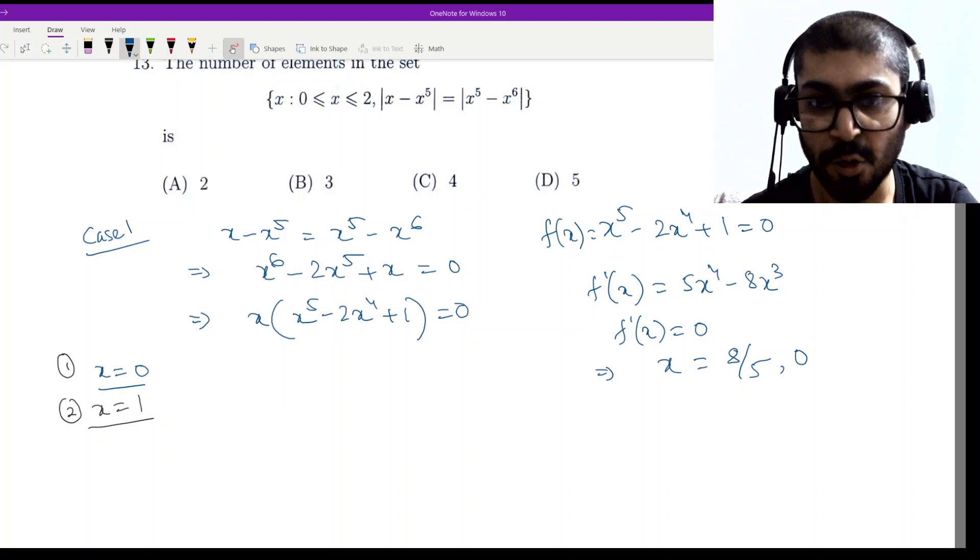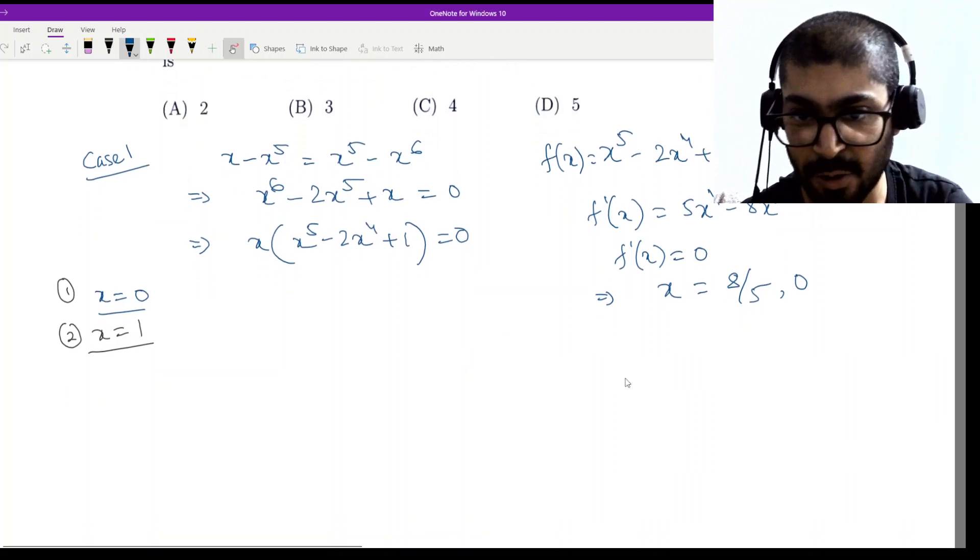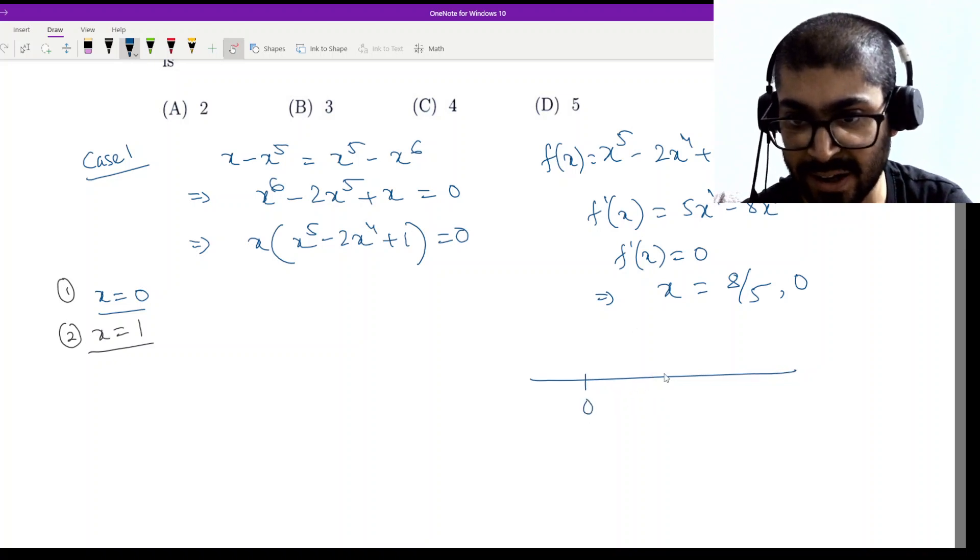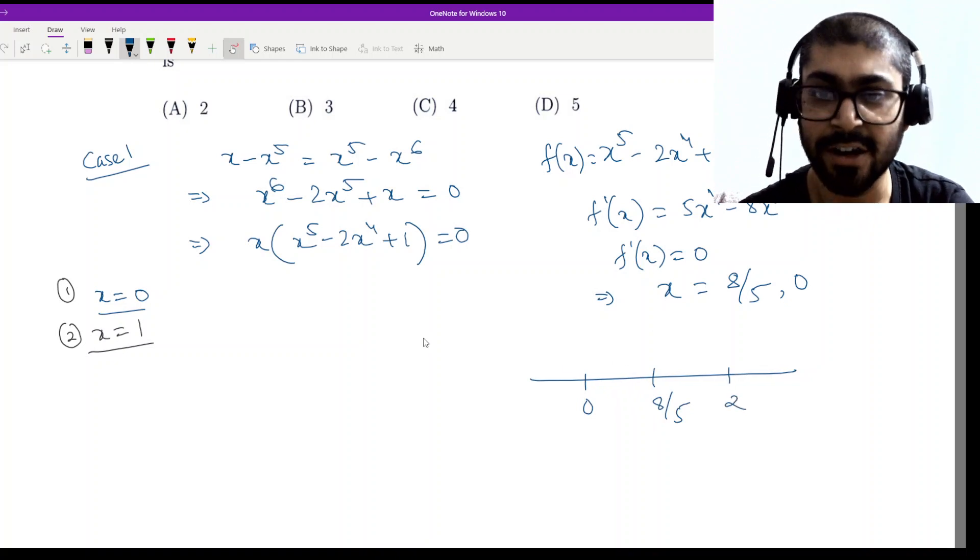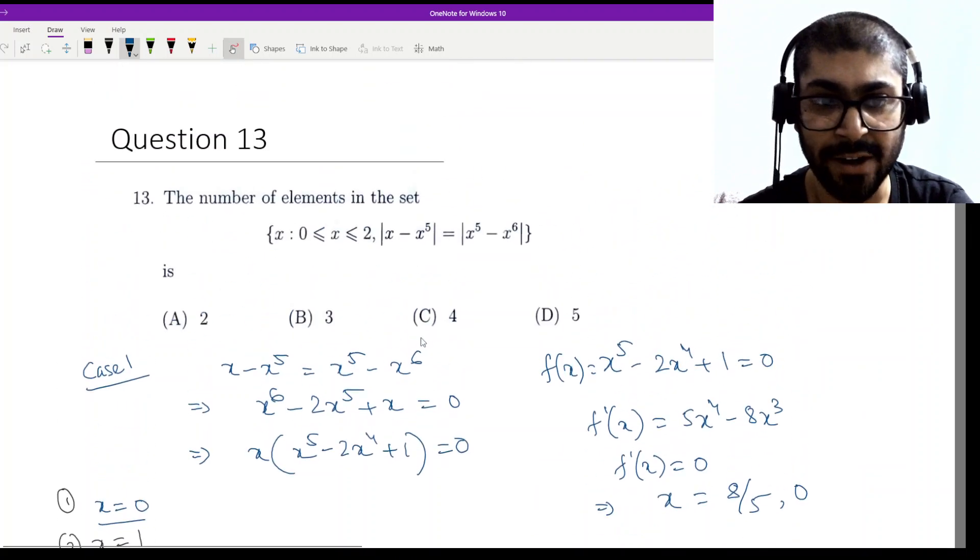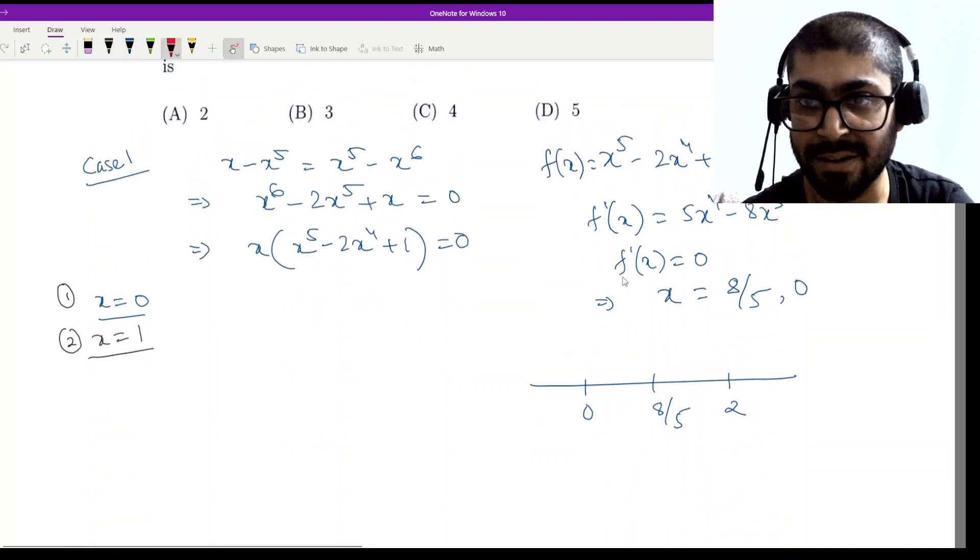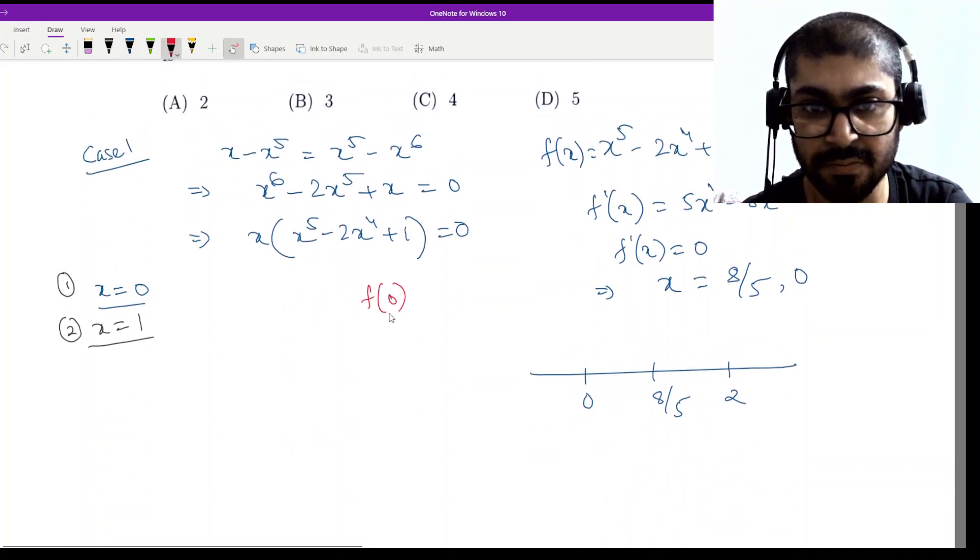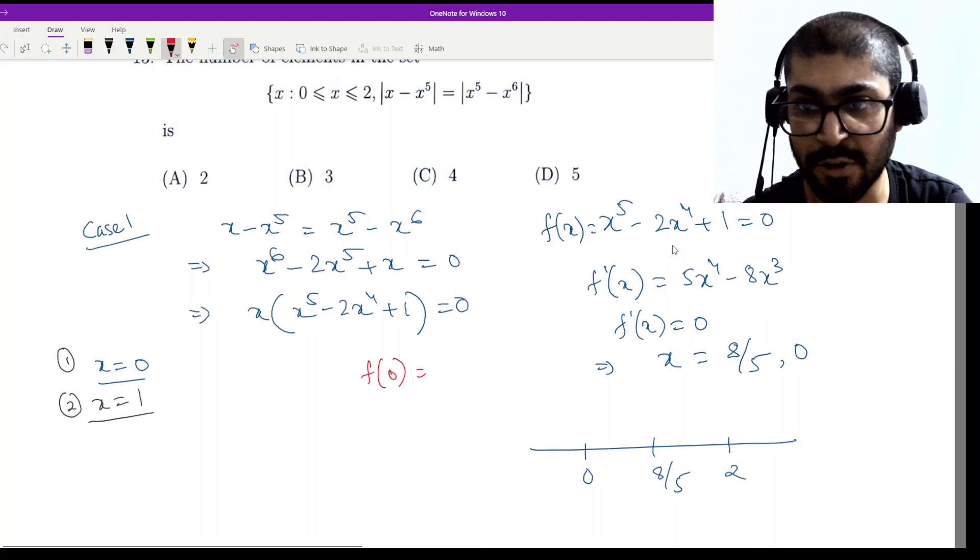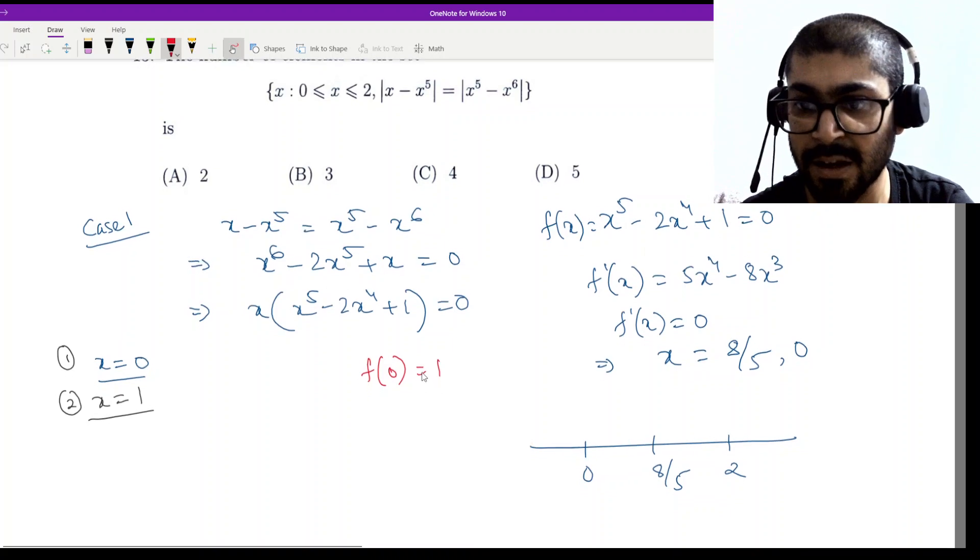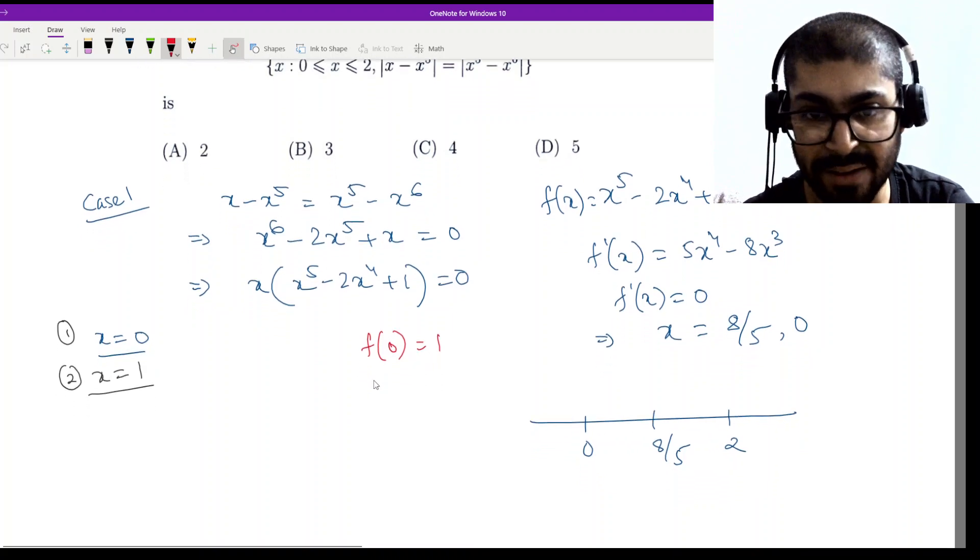And then we will check region-wise where sign changes are going to happen. So we will take the number line. Then we will mark here 0, here 8 by 5 and here 2. So what is the value at 0? The value at 0 is positive. We have checked f(0) equal to 1. And f of 8 by 5, this value we have to calculate. 8 by 5 means 1.6, so f of 1.6 we have to calculate.